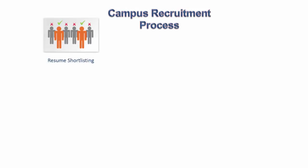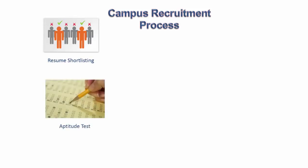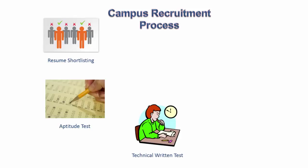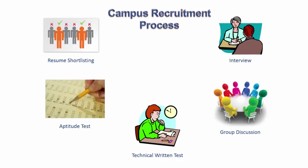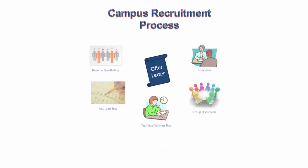Let us begin with the campus recruitment process. The process begins with shortlisting of resumes — for example, 60% throughout all semesters could be the cutoff percentage for some companies. The shortlisted candidates are then supposed to clear a mathematical aptitude test, sometimes followed by a basic technical written test, then group discussion, followed by technical and personal interview, and finally an offer letter.